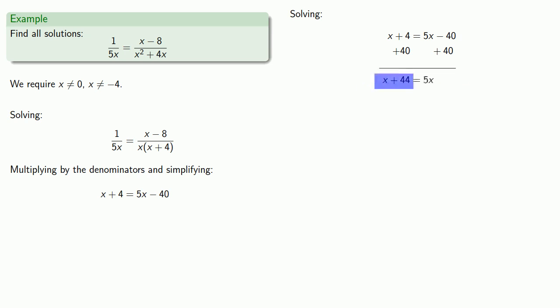Over on the left-hand side, we have a sum, so we can either subtract x or subtract 44. If we subtract x, that'll eliminate it from the left-hand side, and we already have x on the right, so that'll give us a simpler equation. So we'll subtract x from both sides. And now, over on the right-hand side, we have a product 4 times x, so we'll get rid of that by dividing by 4.